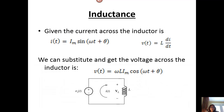When we look at the current across the inductor, we know that if the current is I sub m times the sine of omega t plus theta, then the voltage must be the derivative of that times the magnitude of the inductance. We can therefore substitute and we get the voltage across that inductor as omega L times I sub m times the cosine of omega t plus theta.